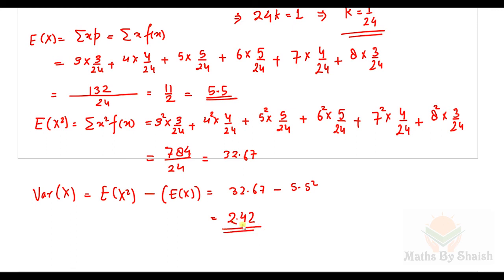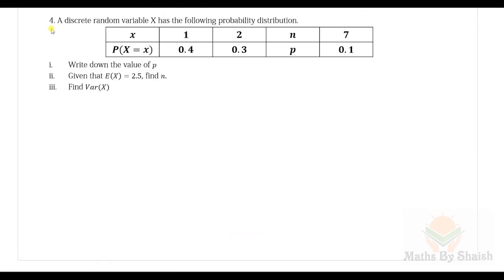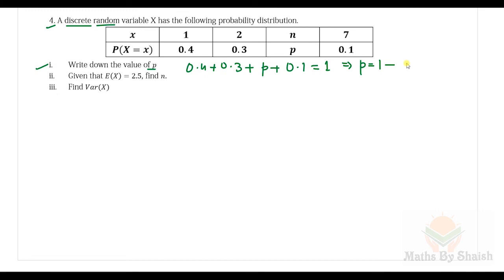Question four: a discrete random variable X has a probability distribution shown in the table. Write down the value of p. Since it is a discrete random variable, all probabilities must sum to 1: 0.4 + 0.3 + p + 0.1 = 1, so p = 1 − 0.8 = 0.2.